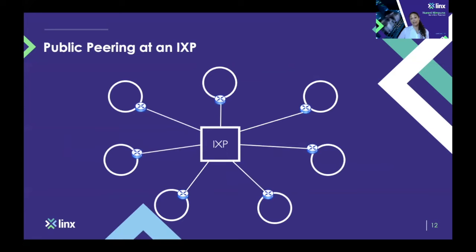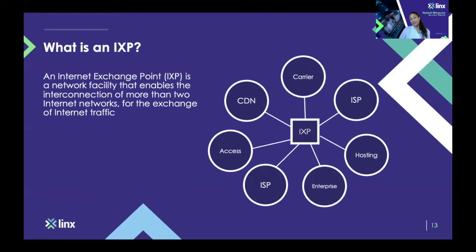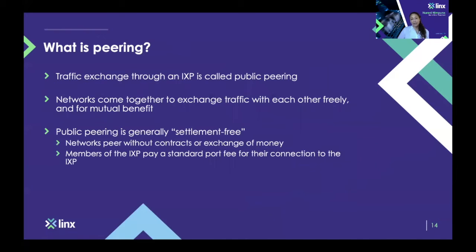That brings us to peering at an Internet Exchange Point. An IXP — an Internet Exchange Point — is a facility that enables traffic exchange between several networks. It acts as a hub for those networks to exchange traffic with each other. Peering is what it's called when networks exchange traffic at an Internet Exchange Point. They normally do so freely because both parties recognize there's a mutual benefit. Most of the time it's done in a settlement-free manner, meaning those networks don't exchange money or sign a contract. All members simply pay a standard port fee at the Exchange Point, which they use for interconnecting with others.